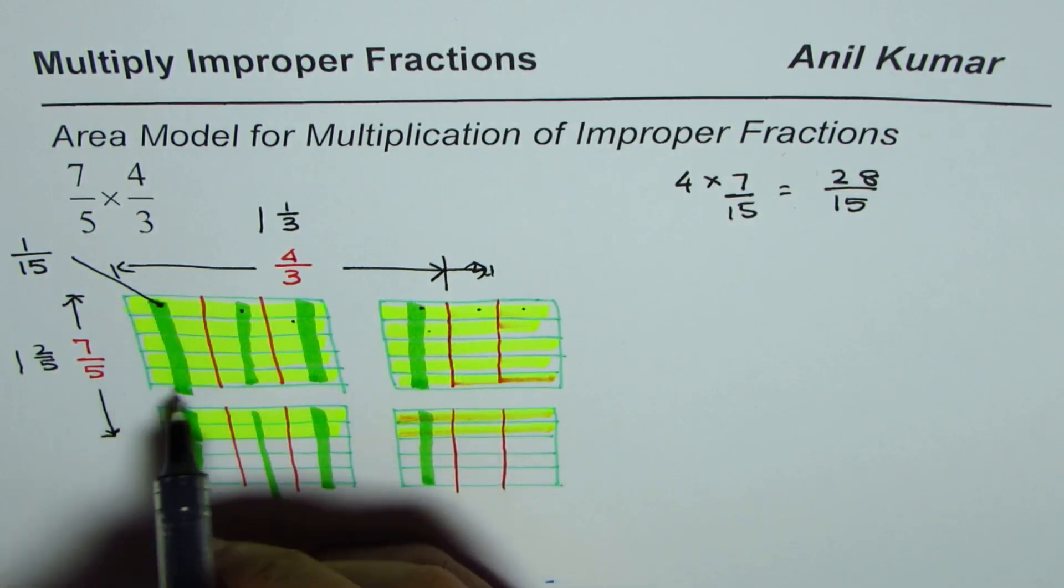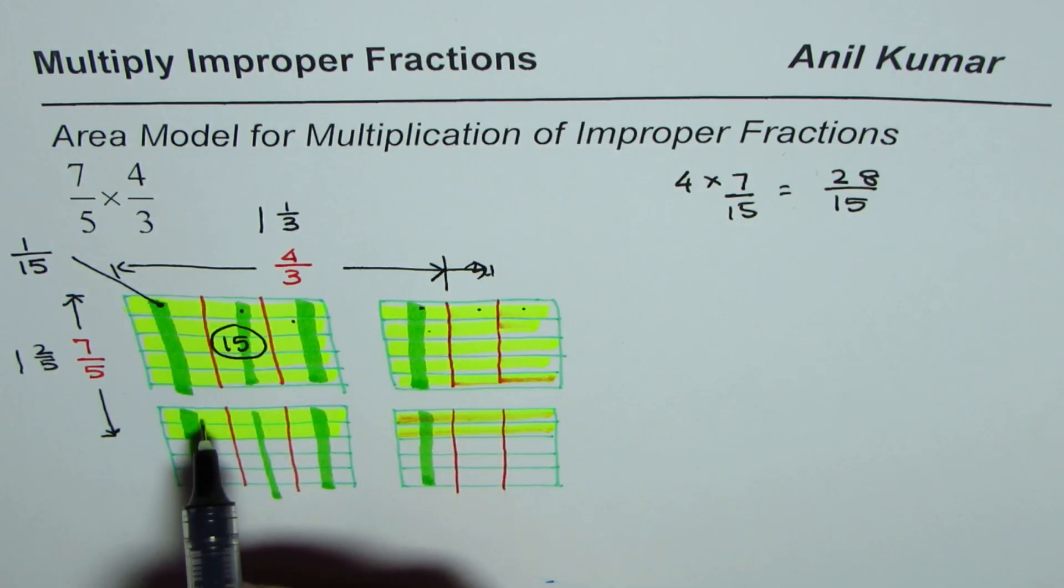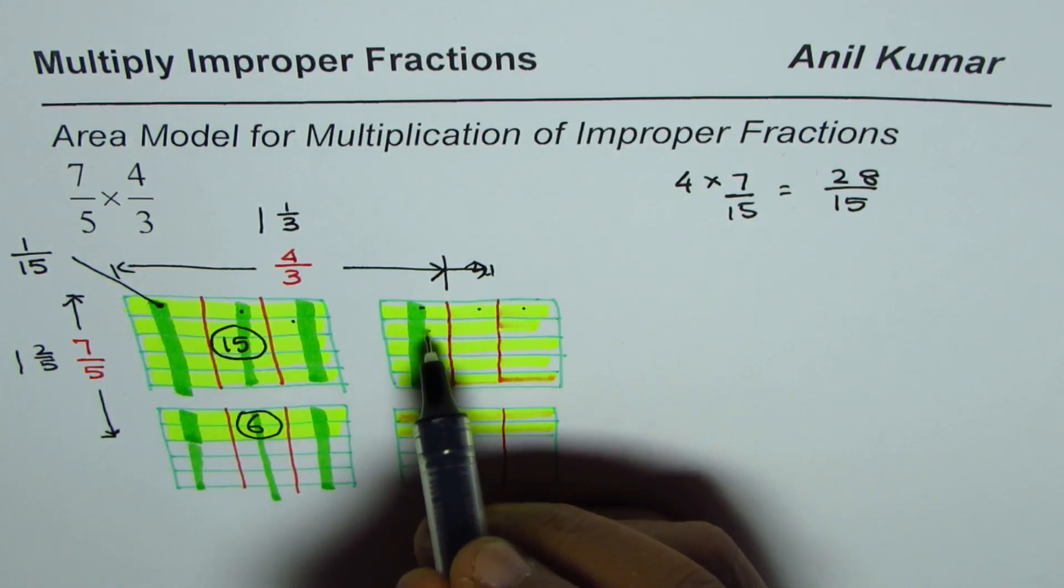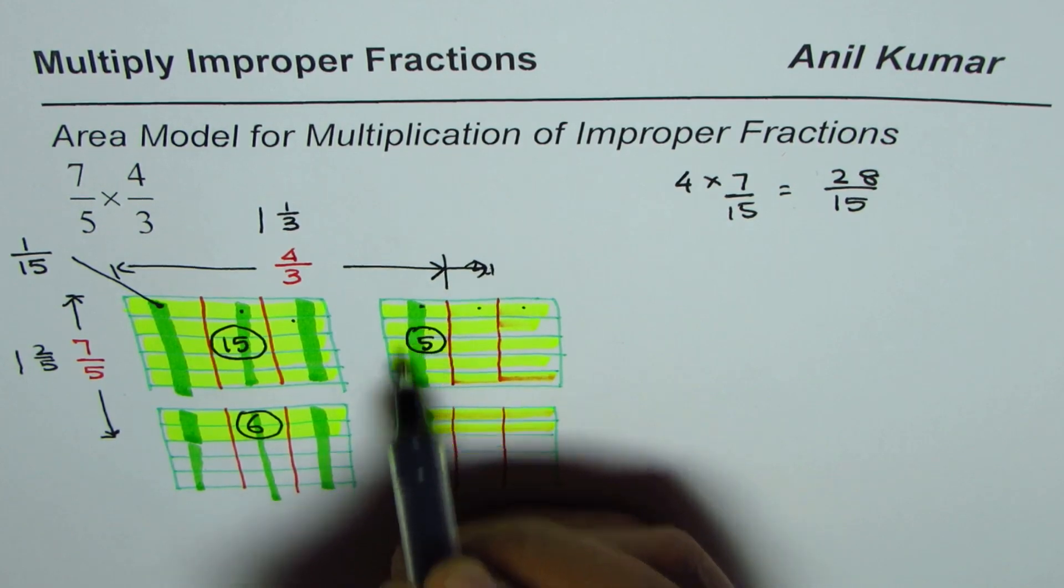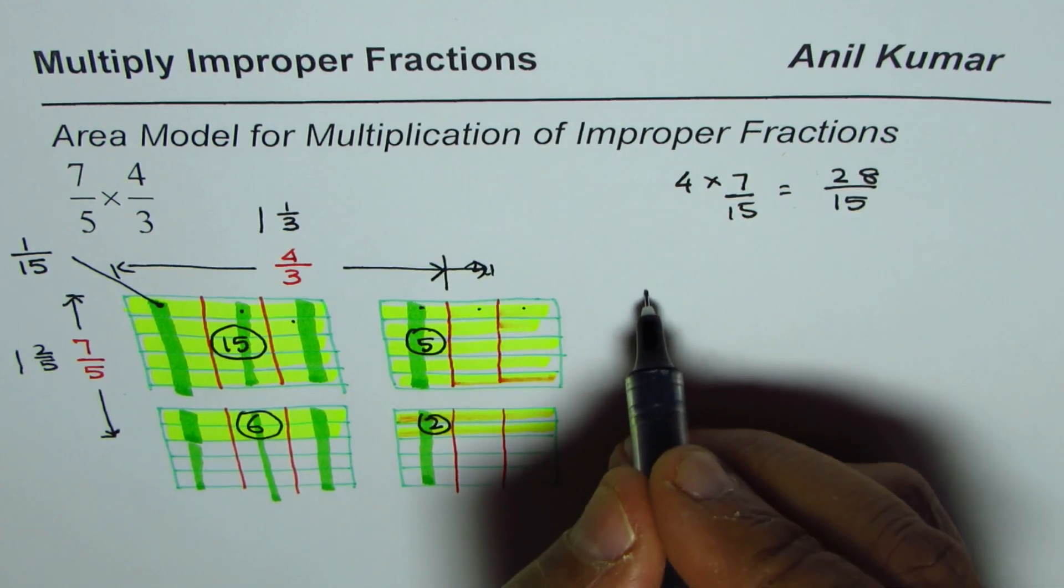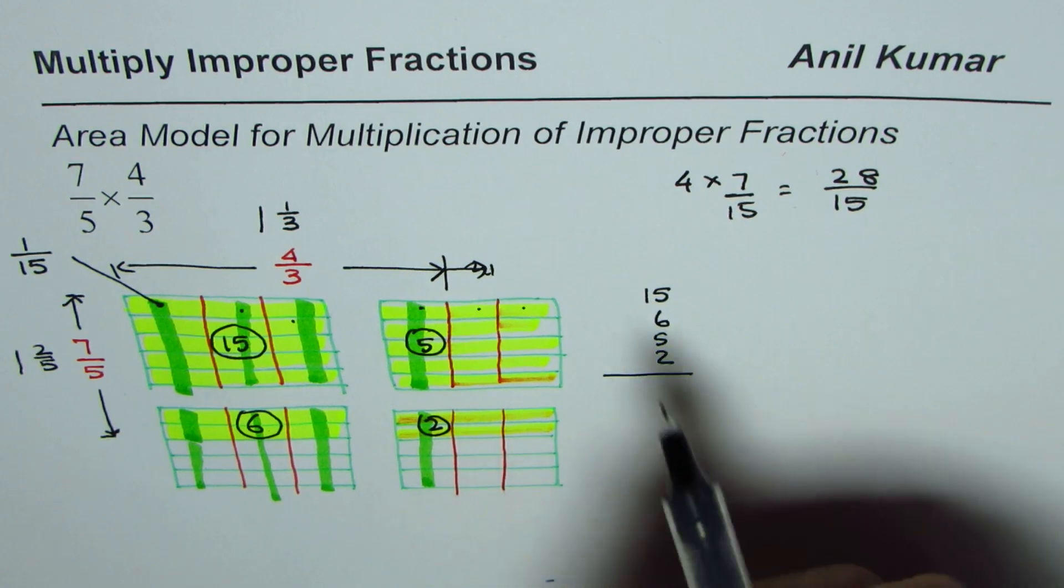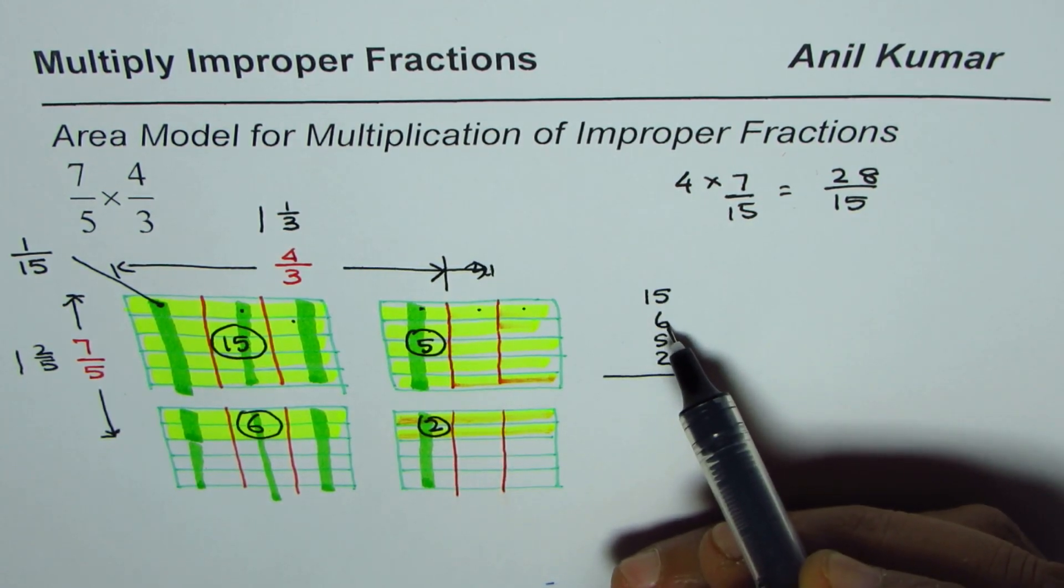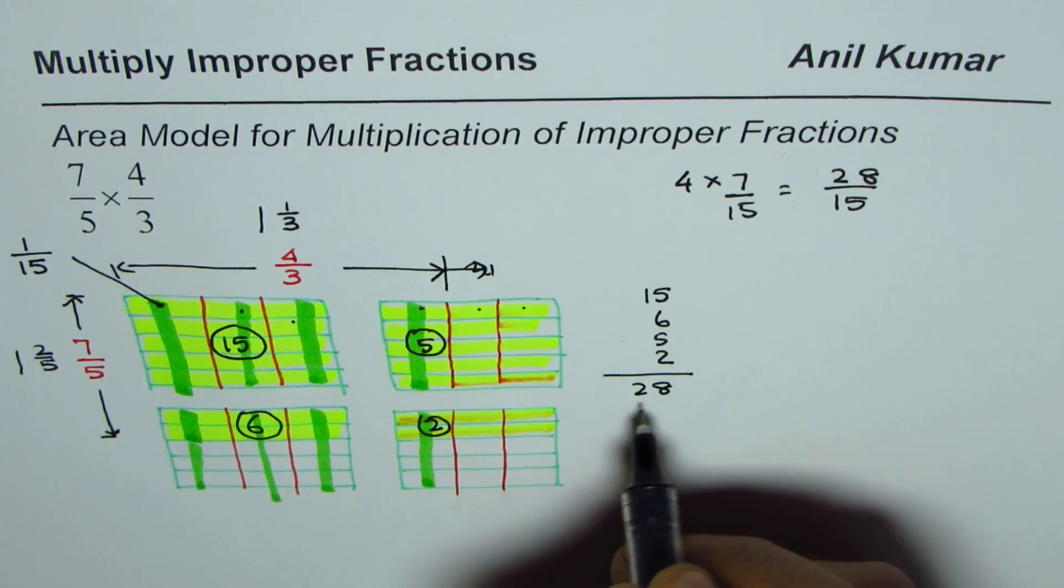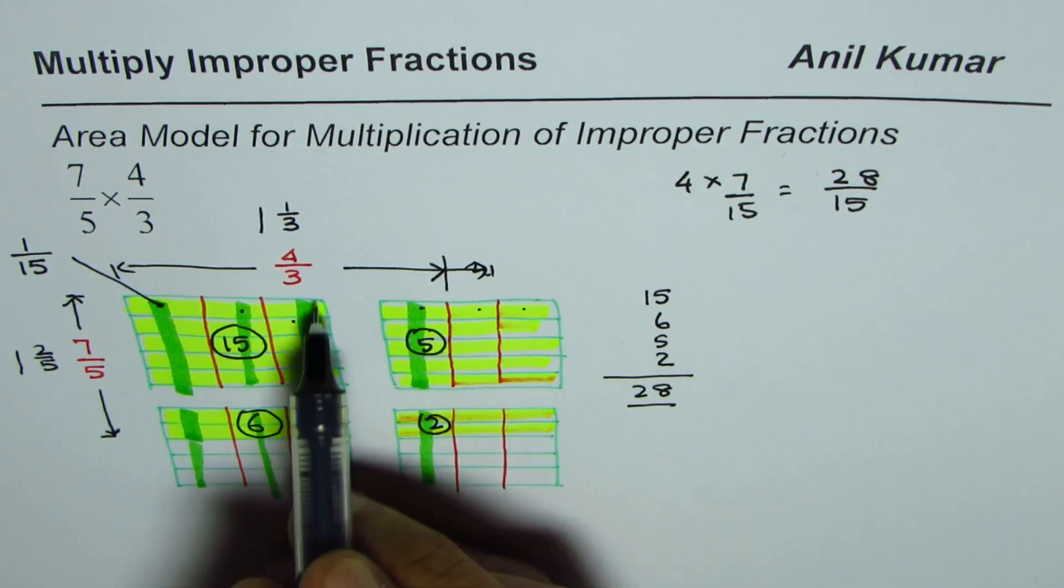So we have 15 here in this. 1, 2, 3, 4, 5, 6. The whole thing has 15. We know this is 15. And here we have 1, 2, 3, 4, 5, 6. In this case, we have 1, 2, 3, 4, 5. And here we have 2 shaded. You can actually count them also. So we could add 15, 6, 5, and 2.